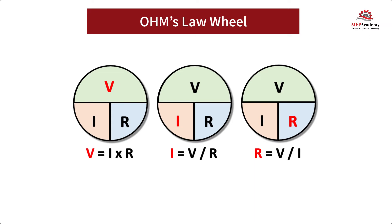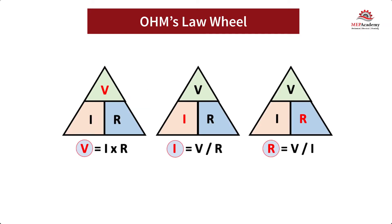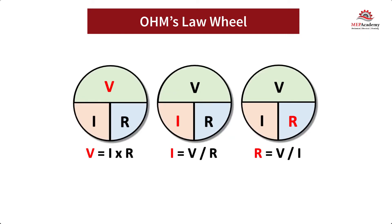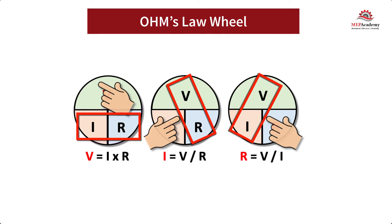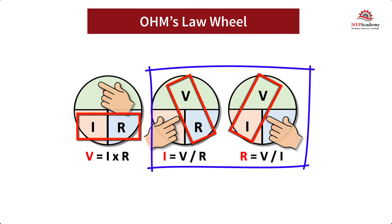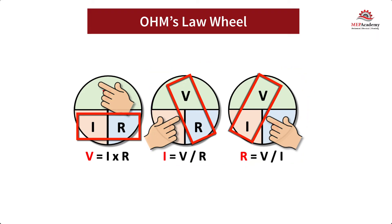The Ohm's Law Wheel. The formulas are easily remembered by using the Ohm's Law Wheel — you may also see versions of this using a triangle. Each of the three formulas is represented by one of the three wheels, with the value we are solving for colored red. If you cover the V for Voltage, you'll only see Current and Resistance. When the letters are side by side, you multiply. When Voltage is over any letter, you divide into the voltage. Just cover up the letter you want to solve for and the formula will reveal itself.